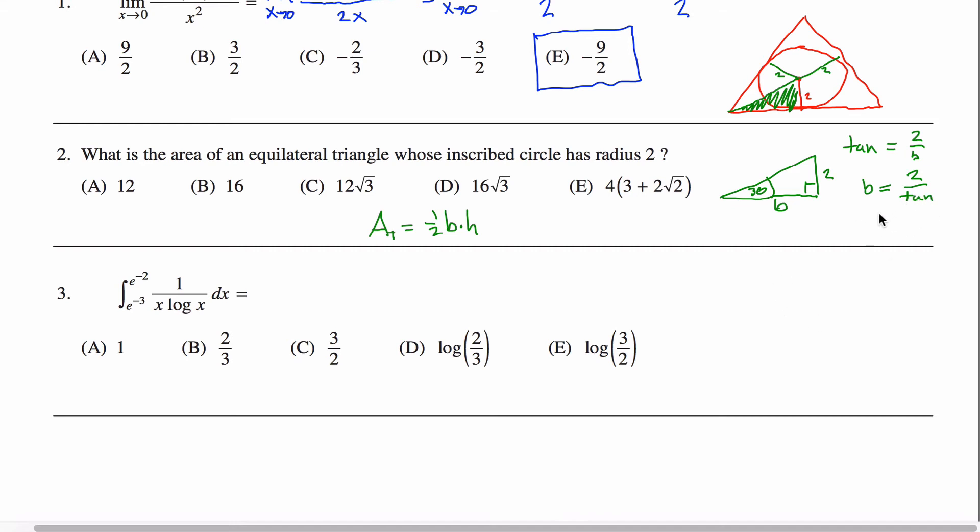I don't have tangent values memorized off the unit circle, but I know that tangent is sine over cosine. So if I replace this tangent of 30 with sine of 30 over cosine of 30, and I have this fraction inside of a fraction, I can rewrite it as two cosine of 30 divided by sine of 30.